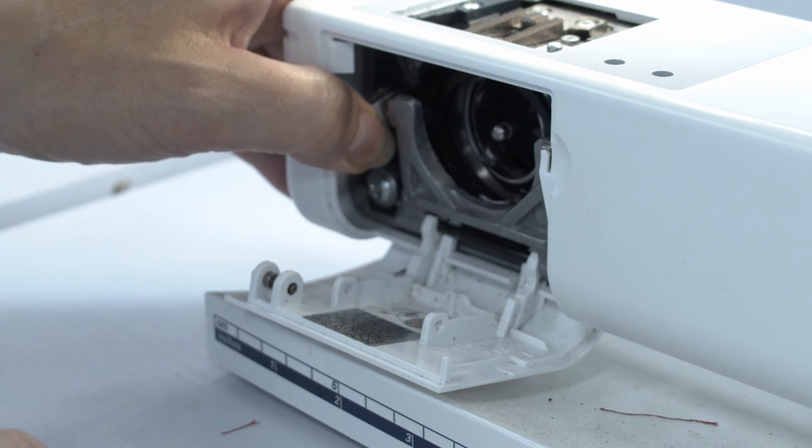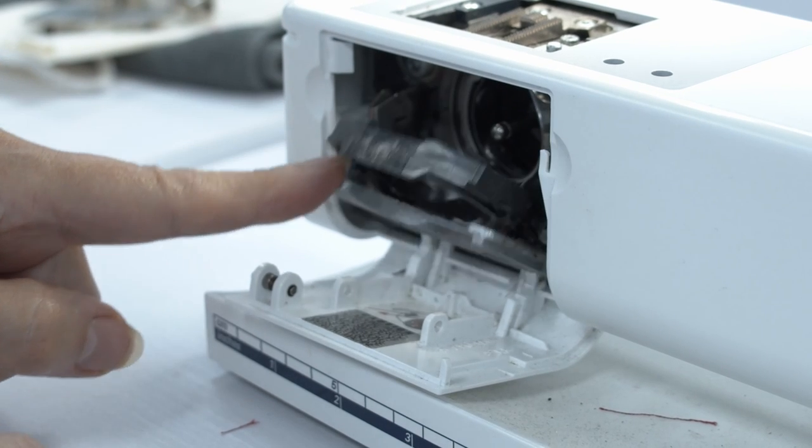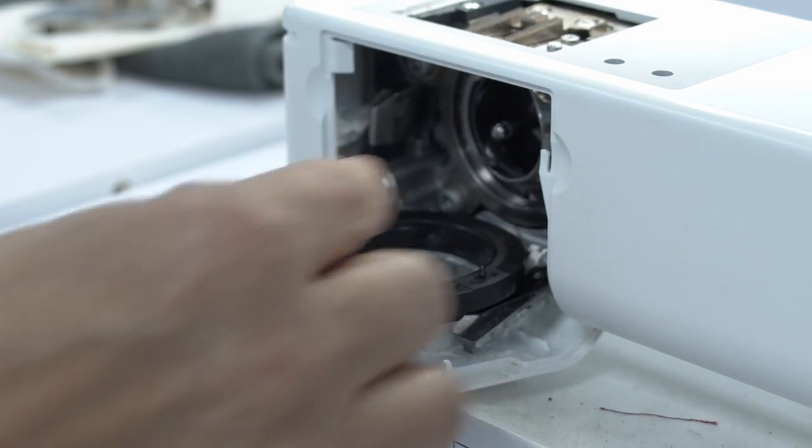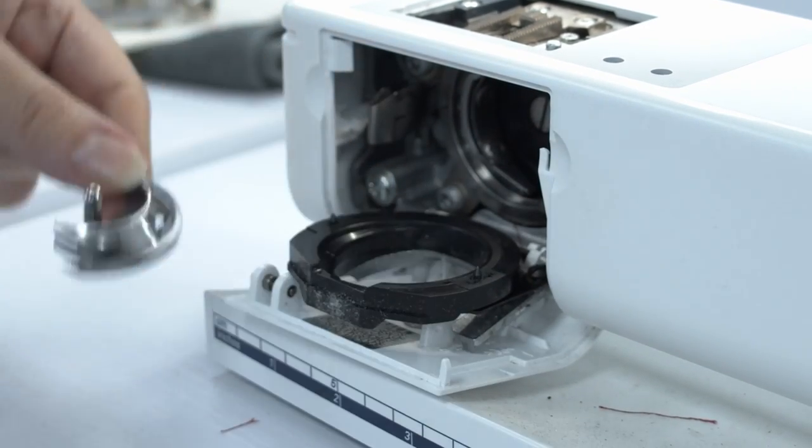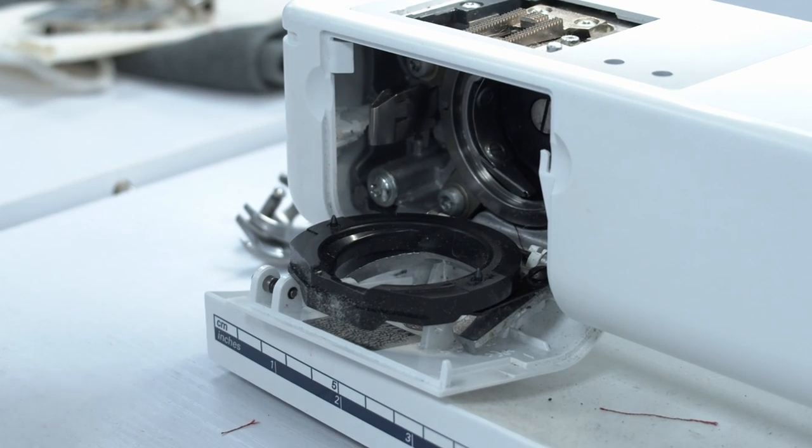Okay, so now I'm going to release the retainer by pushing the lever here to the left and dropping the race retainer. I'm now going to remove the hook, which is half of a circle, and we're going to look inside here and see if we can make it cleaner.